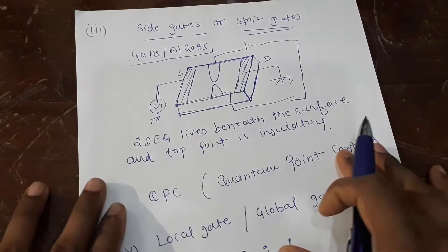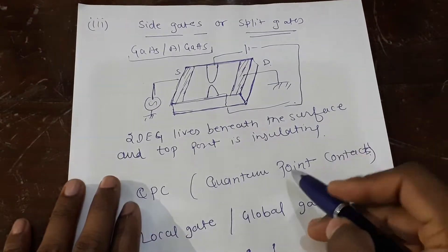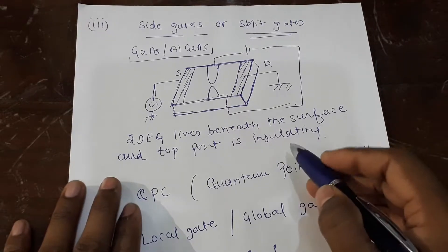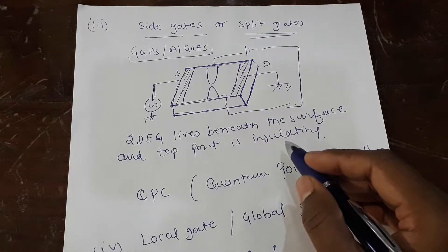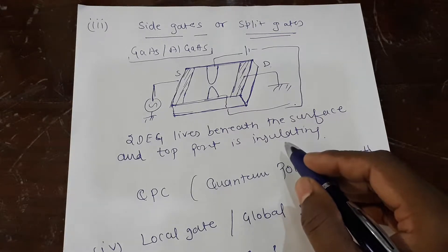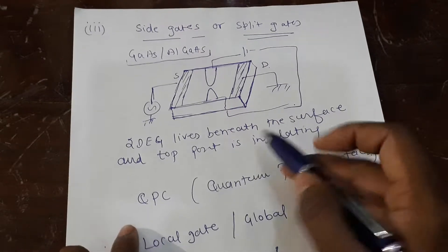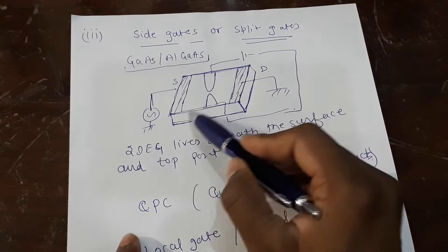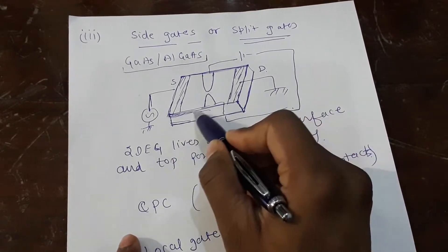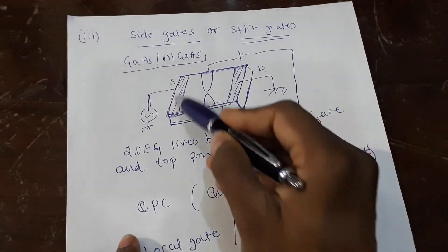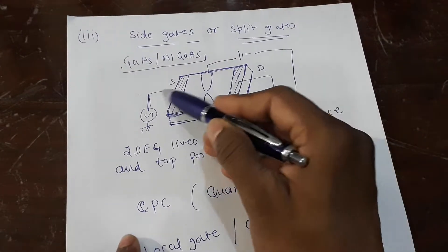Now let's talk about side gates or split gates. This has a very huge advantage in two-dimensional electron systems, because the number of charge carriers are very less, so the effect of the gating is very pronounced and you can see the effects. This is like a gallium arsenide system; the 2DEG system lives somewhere beneath, not on the surface. What you're going to do is put contacts here—source and drain.